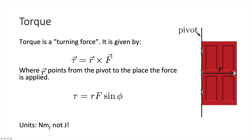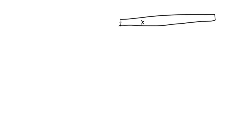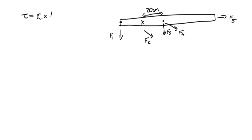Here's a problem: the image shows an overhead view of a meter stick. The pivot point is 20 centimeters from the left-hand end. All five forces are horizontal and have the same magnitude. Rank the forces according to the magnitude of the torque they produce, greatest first. We have F1, F2 at the pivot, F3 and F4 at 20 centimeters from the pivot, and F5 at the end.